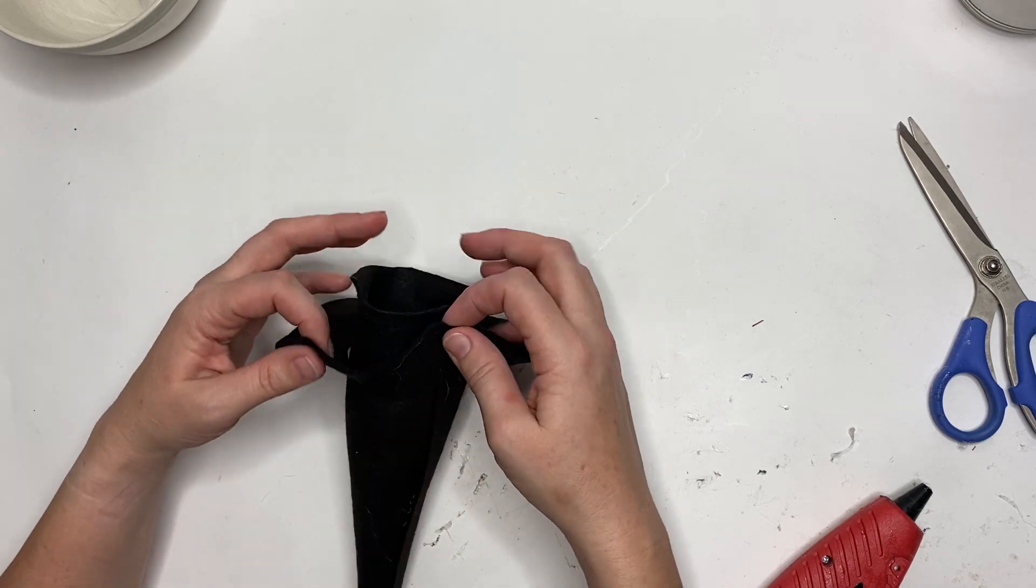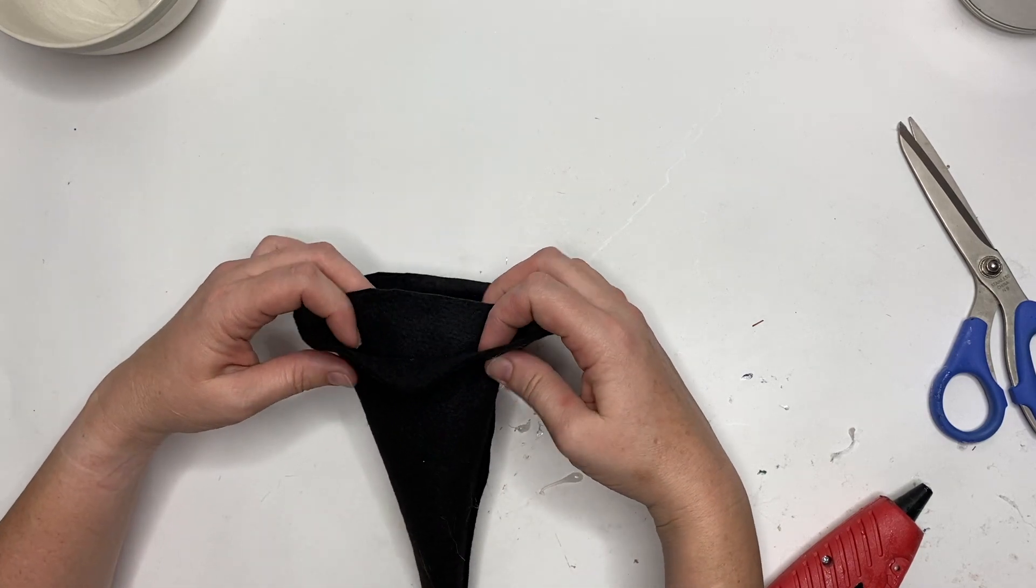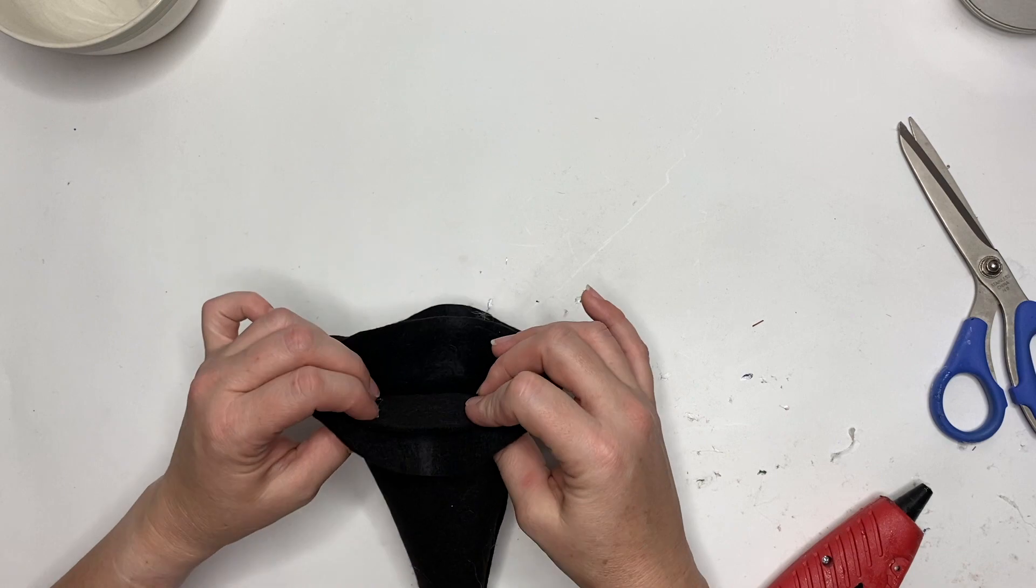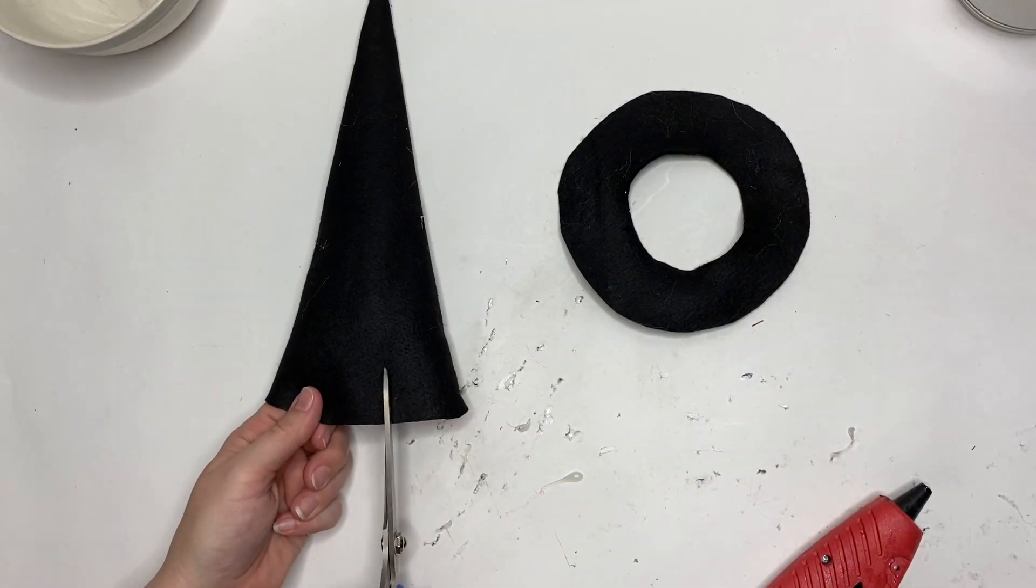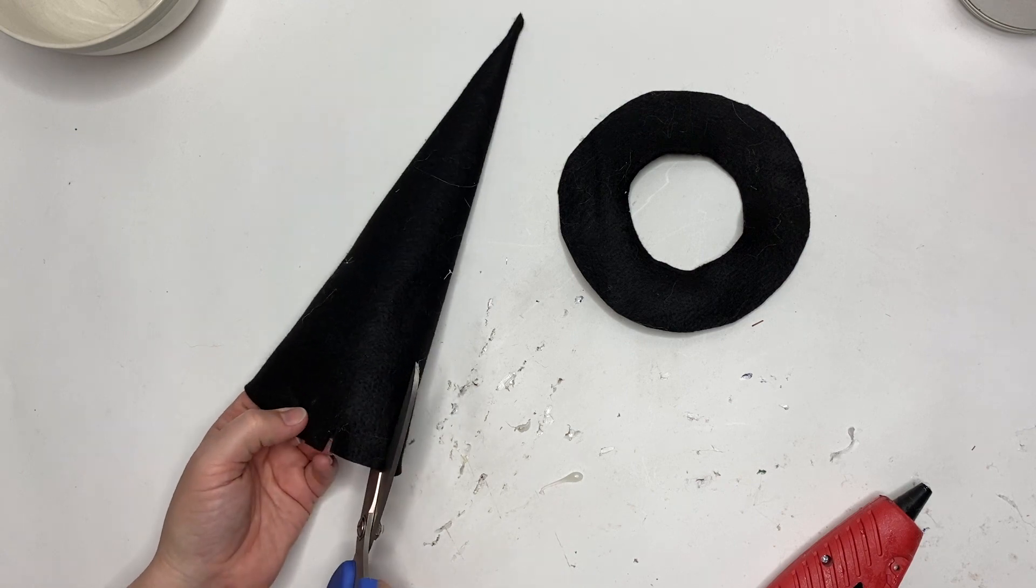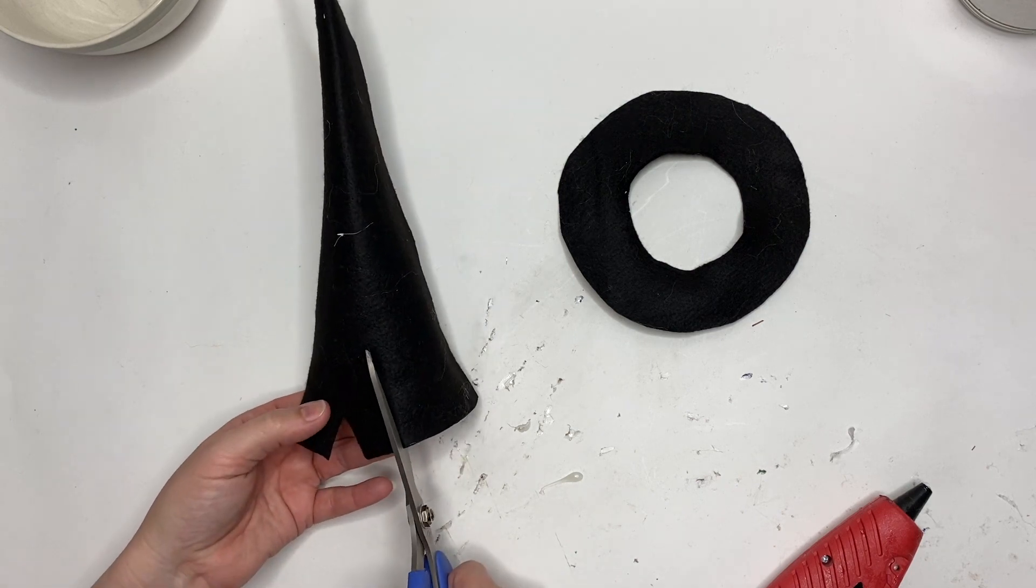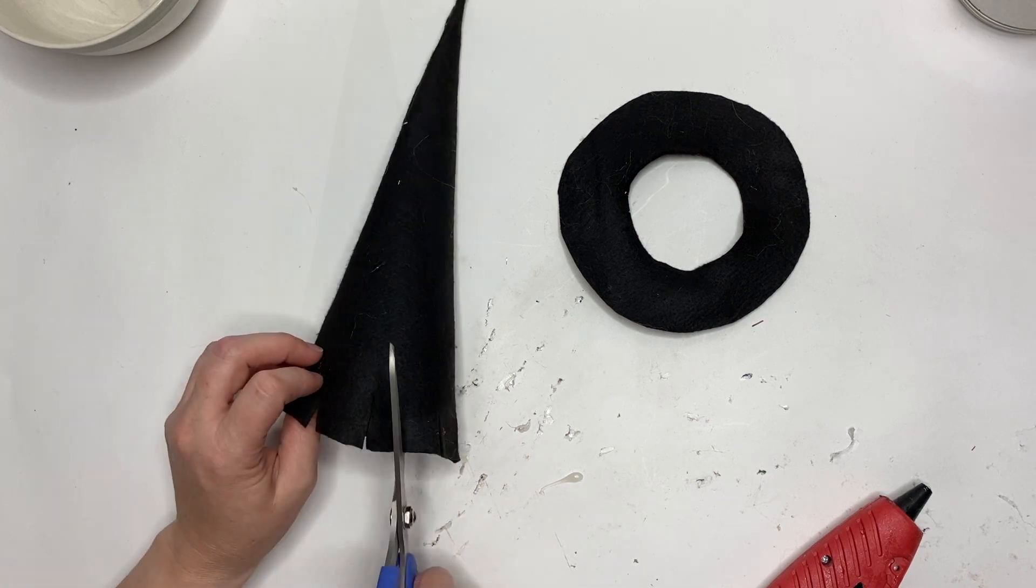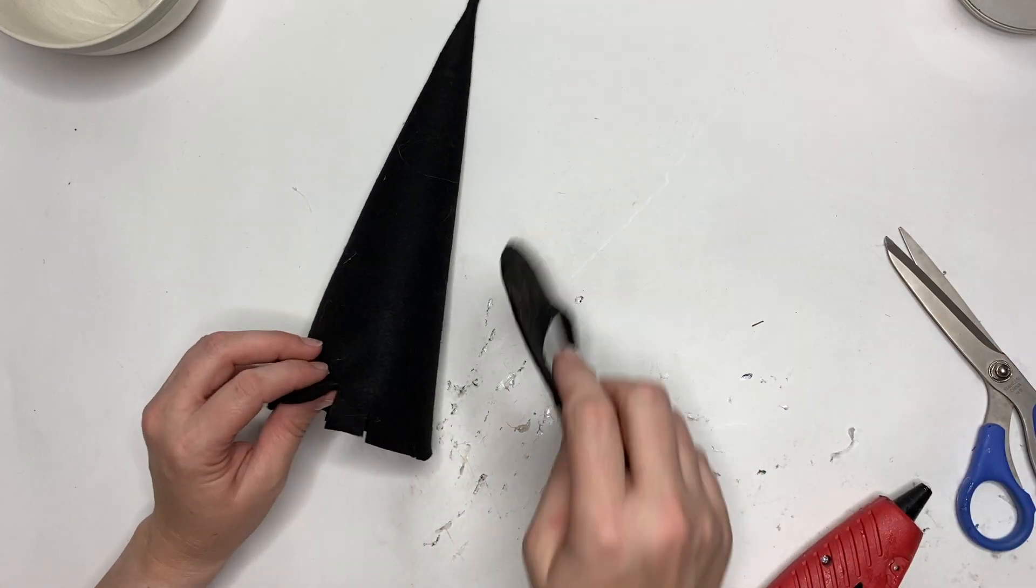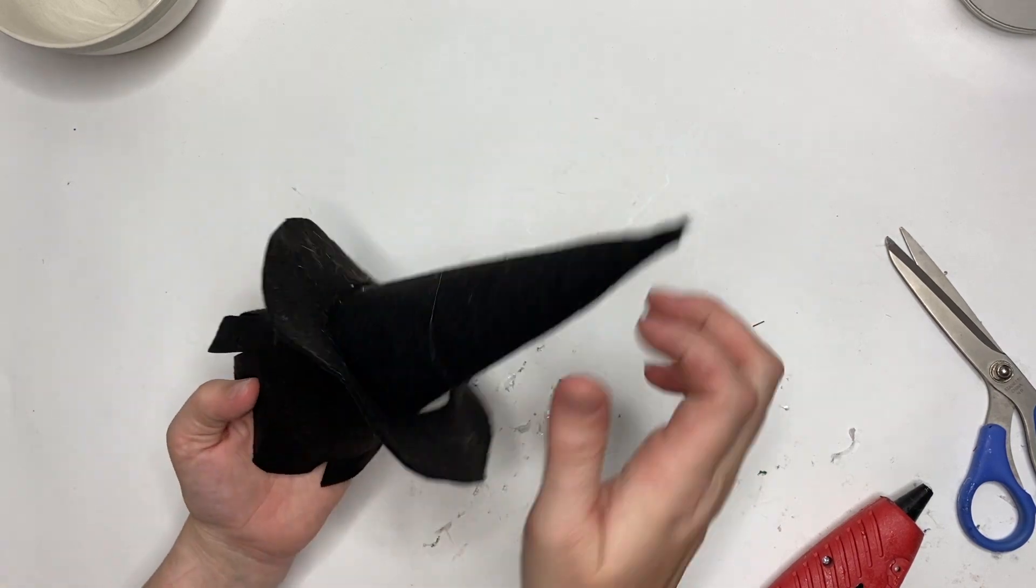Now that we've got our cone all the way made, we're gonna pull it down on the round part—or the other way around—we're gonna put the round part onto the cone and pull it down. Then see this bottom bit here? We're going to cut strips—flaps. We're gonna cut these flaps all around, about half inch to an inch.